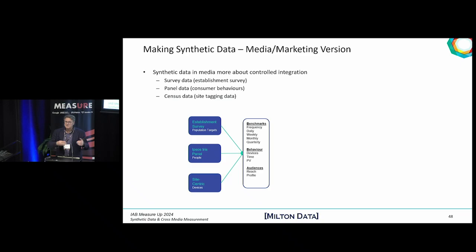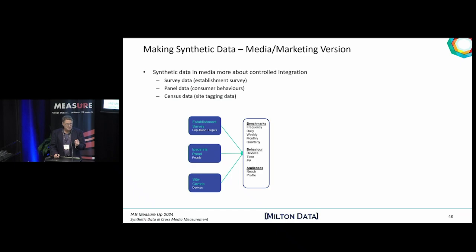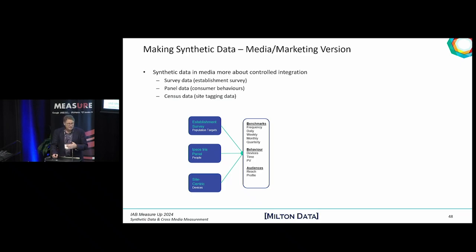I'd like to recognise Ipsos here because this is their flow diagram, very similar to many other flow diagrams we see in the creation of synthetic datasets. The difference between these AI and LLM type applications and the use of synthetic data for media and marketing research is the ability to control integration and preserve the extent to which we've got discrimination in terms of behaviours, both within and across the platforms being measured. The Ipsos dataset is a great example — we have an establishment survey about the nature of the online community in Australia, a panel of data maintained at a high standard, and then we bring site-centric data and tag data to integrate all those behaviours into a single dataset.